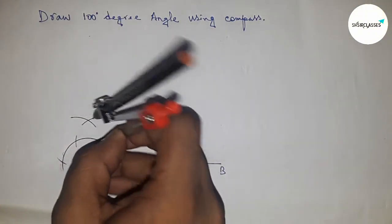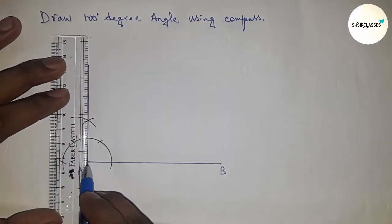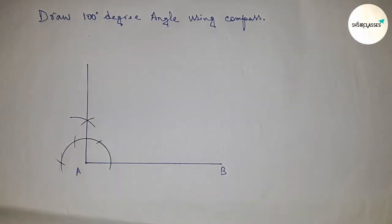Next, we have to construct first a 90 degree angle. So constructing or drawing a 90 degree angle here first.